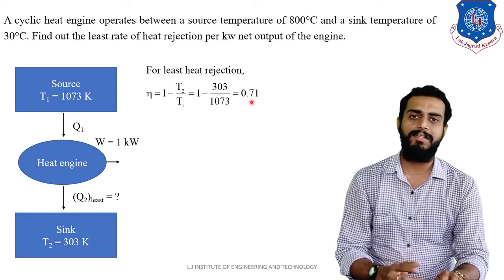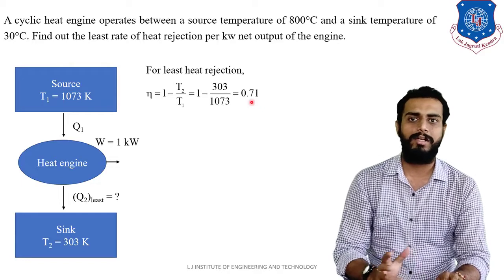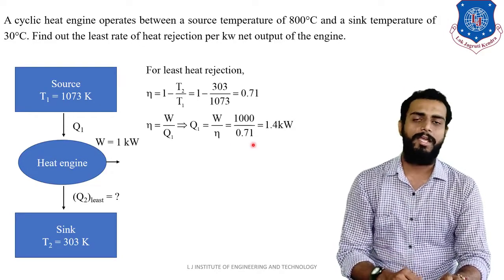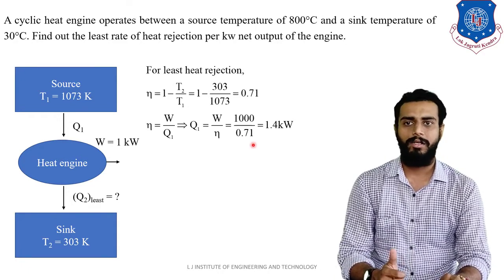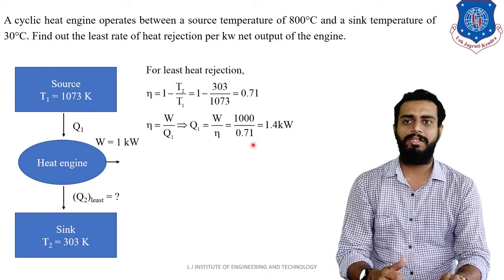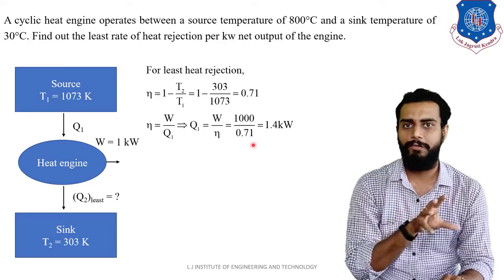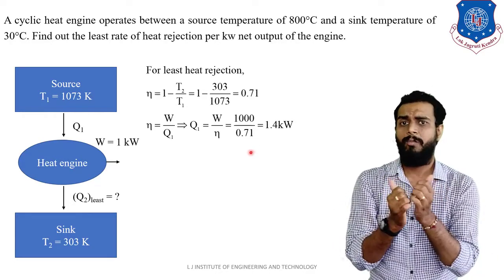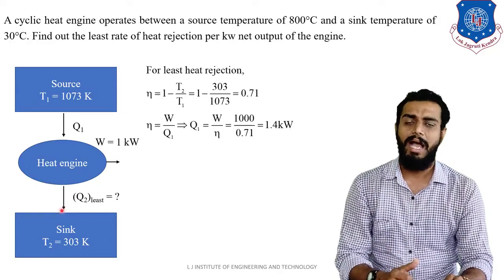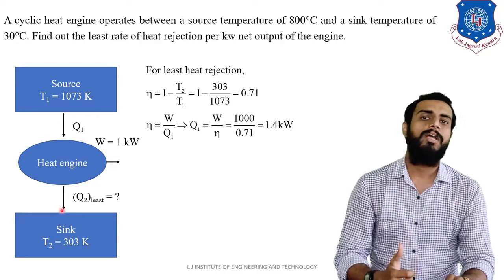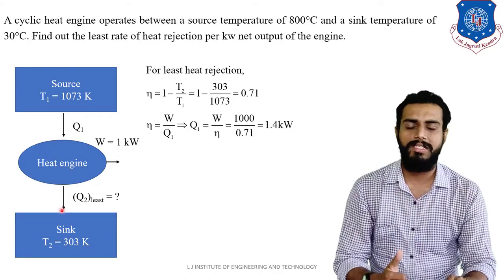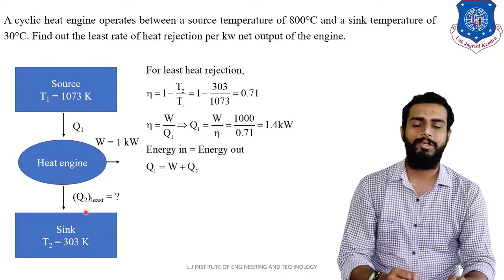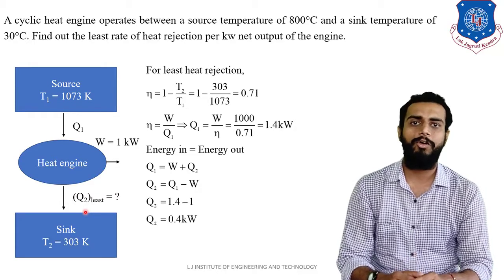We also know that efficiency = work done / heat supply, so heat supply Q1 = W / eta = 1000 W / 0.71 = 1.4 kW. Now applying the energy balance for the heat engine — energy in equals energy out — Q1 is energy in, and W and Q2 are energy out. So Q1 = W + Q2, which gives Q2 = Q1 − W = 1.4 − 1 = 0.4 kW.